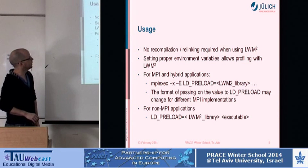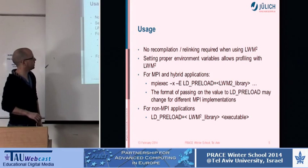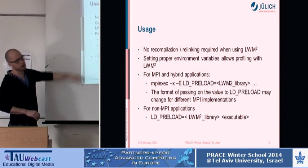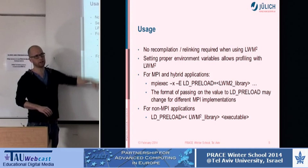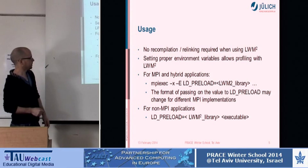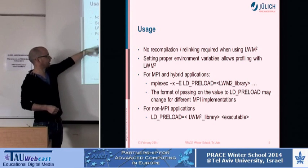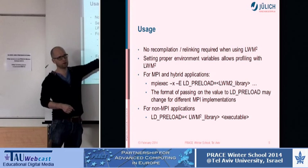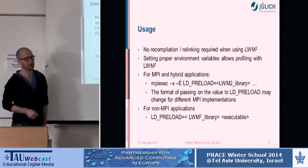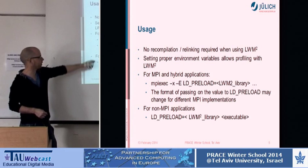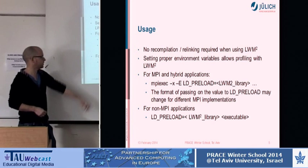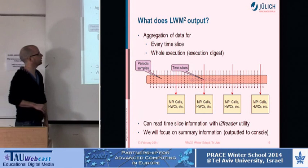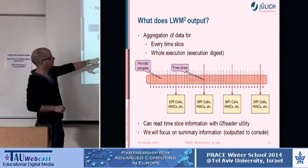On the usage side, you don't need to recompile — just set a couple of environment variables. This is specific to an MPI on Jülich systems; if you want to see exactly what variables you need to set, you can look inside the job scripts from today. Basically you need to set LD_PRELOAD and get that environment variable into your MPI. For non-MPI applications it's really easy — you just set the environment variable and it'll run.